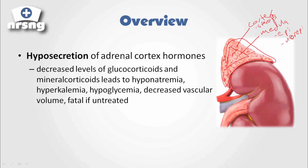What happens with Addison's disease is we actually have a hyposecretion of adrenal cortex hormones. From our adrenal cortex, there is a decrease in the secretion of these steroids. This decreased level of glucocorticoids and mineralocorticoids leads to hyponatremia, hyperkalemia, hypoglycemia, and decreased volume — and it can be very fatal if untreated. Addison's disease is hyposecretion of adrenal cortex hormones.